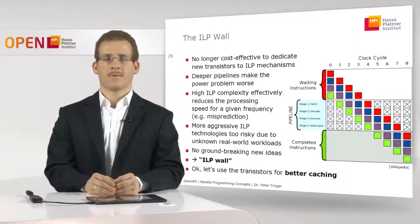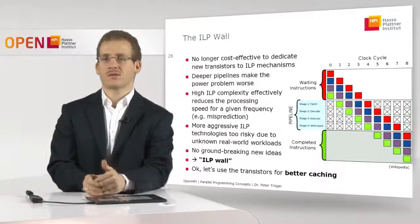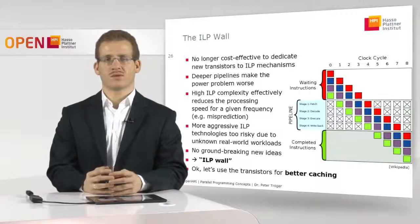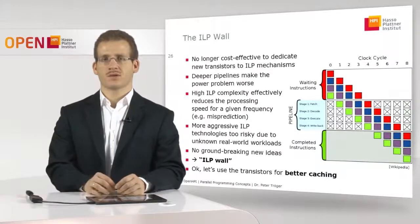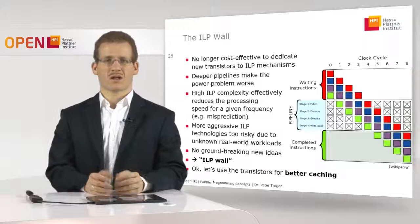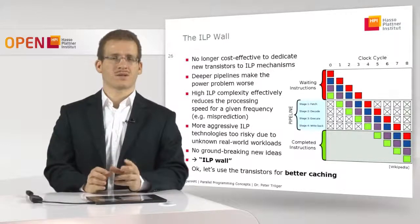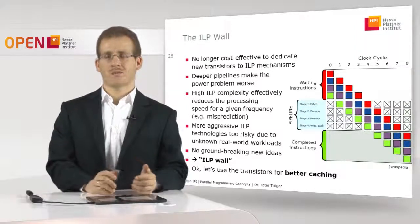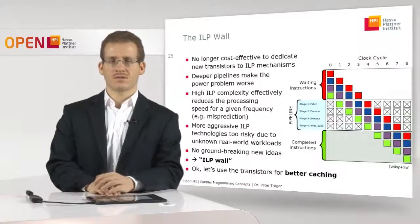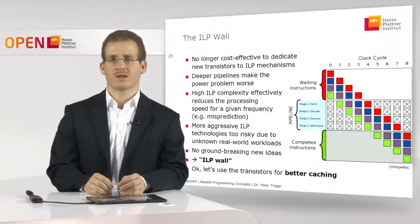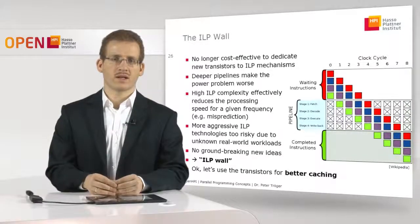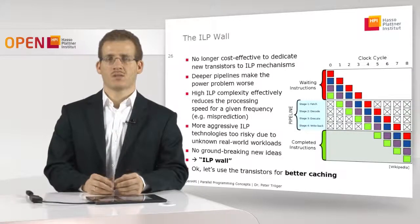The high complexity of such ILP mechanisms today makes it very difficult to improve them even further — we have somehow reached a limit. If we introduce more aggressive ILP technologies based on the transistors we get from Moore's law, we really don't know how this acts in practice. We may run into situations where a particular ILP mechanism is counterproductive for a particular software workload — it makes things worse. Therefore we have something called the ILP wall, which states that ILP-based optimization using transistors from Moore's law for better performance is no longer really working. We need other ways to deal with that problem.